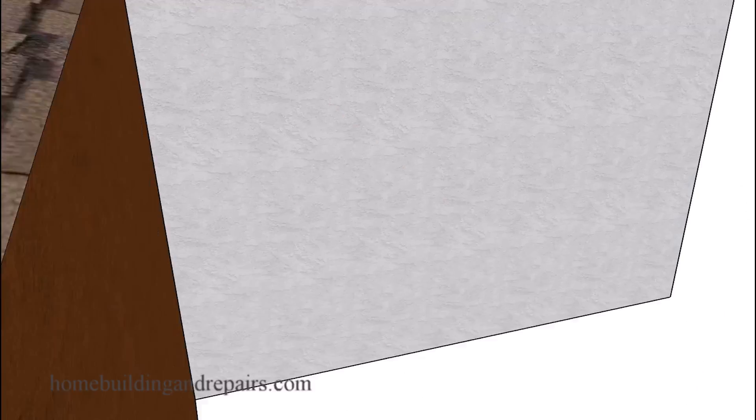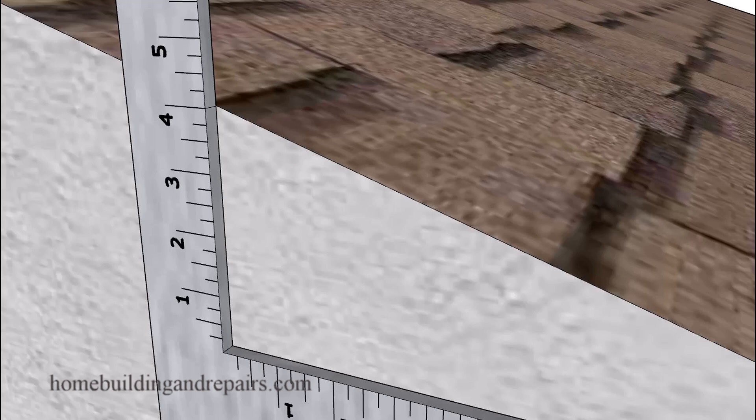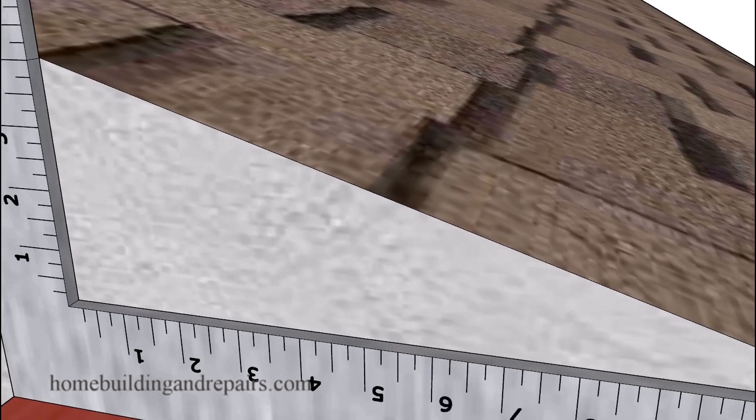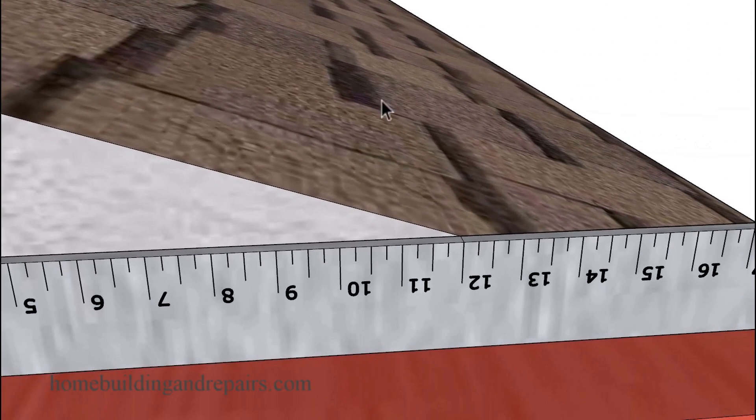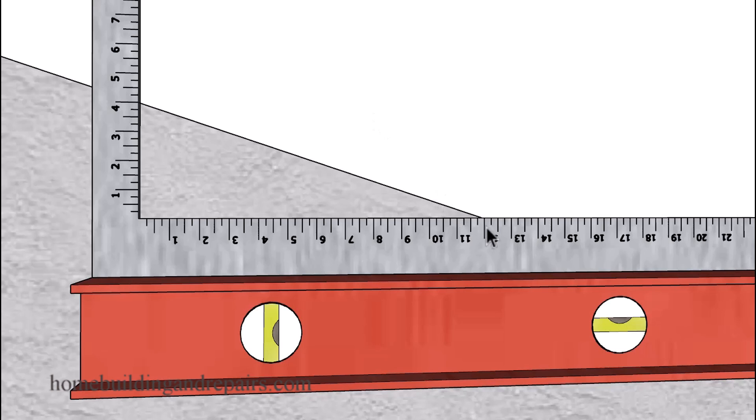And to find the roof pitch all you need to do is put a level on a framing square, put it underneath the framing square and then line up your 12 on one end of the roof like the fascia board for example. And then see what the number is going to be up here. If it's right on the money you have a 4 or a 5 or a 6 in 12 pitch, you're going to be in good shape.